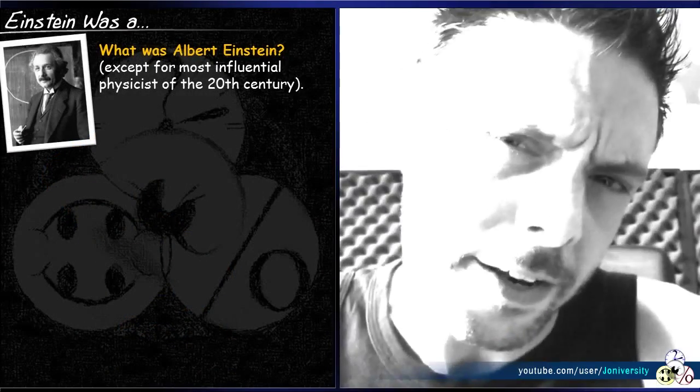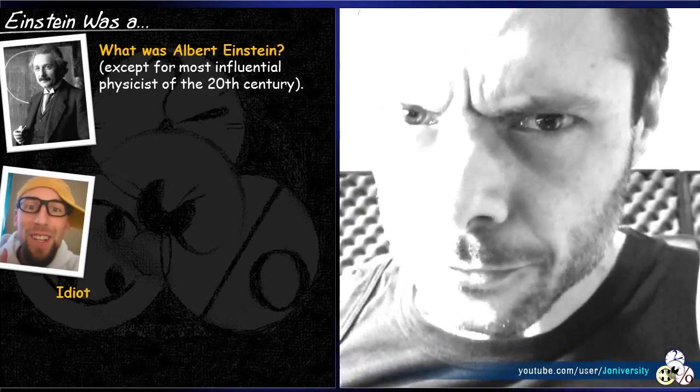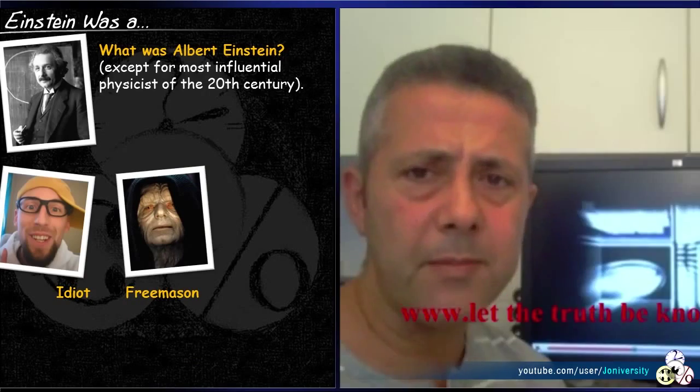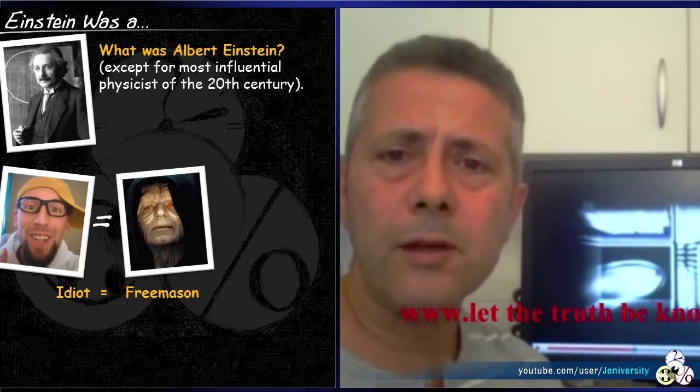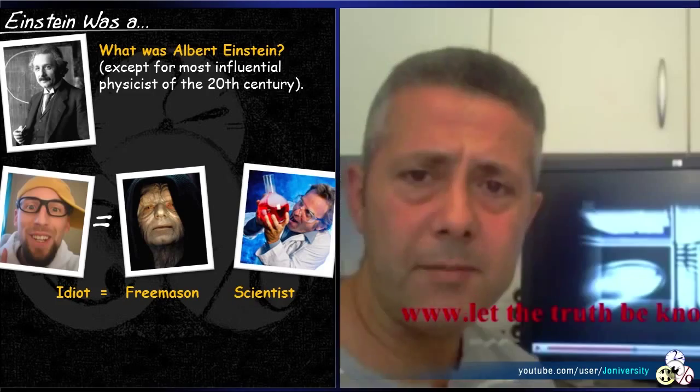So, teabag eyes just said Einstein was an idiot. But as if that's not enough, he was also a Freemason, which apparently is the same thing. And of course, he was also a scientist, which, believe it or not, is the same thing again.